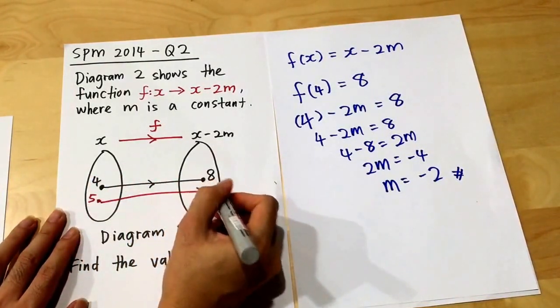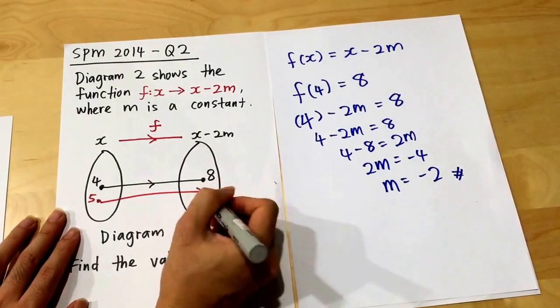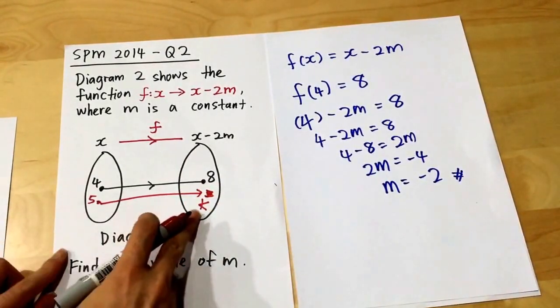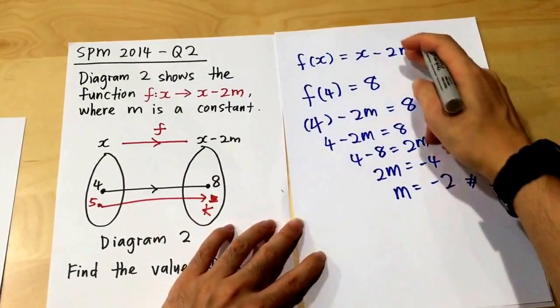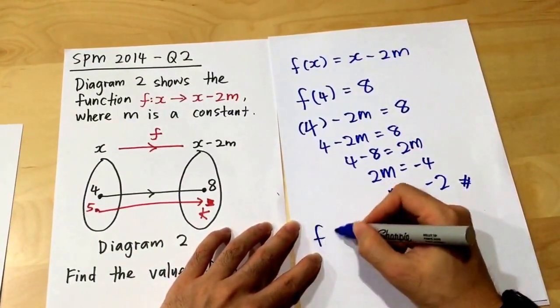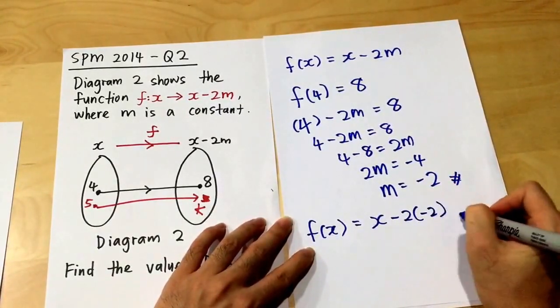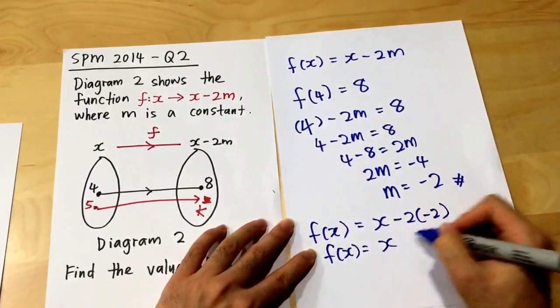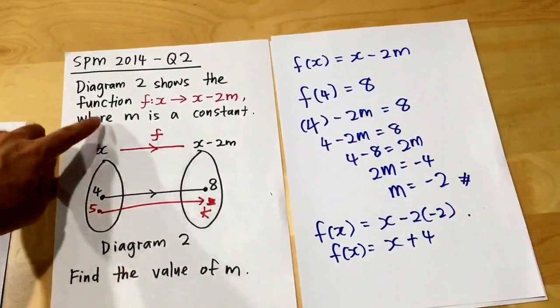what if my x is 5? What value will I get? Maybe use any alphabet, what is the value for k here? What is my image of 5? Since I know my m is negative 2, I substitute into here. I will get my fx equals x minus 2 times negative 2. My fx equals x plus 4.